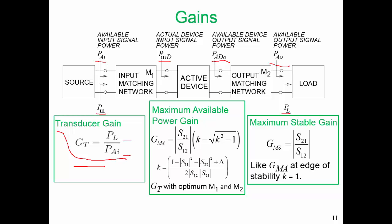Now there are many metrics for gain. Two of the useful ones that we will focus on here are the maximum available power gain and the maximum stable gain. Let's look at the maximum available power gain, GMA. An important thing here is this ratio of S21 over S12 — that is the largest factor defining our maximum available gain. But then we have a modification factor involving what is called the Rollet stability K factor, because it happens to appear in the expression for stability.